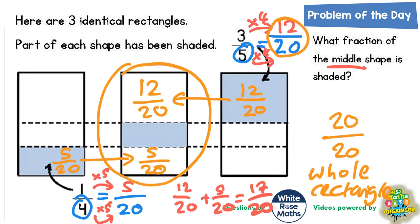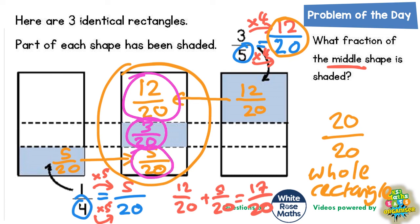That means seventeen twentieths of the middle rectangle is not shaded, which means the shaded bit in the middle must be three twentieths — because twelve twentieths plus three twentieths is fifteen twentieths, plus another five twentieths is twenty twentieths, which is the whole rectangle. So the final answer: what fraction of the middle shape is shaded? Three twentieths.